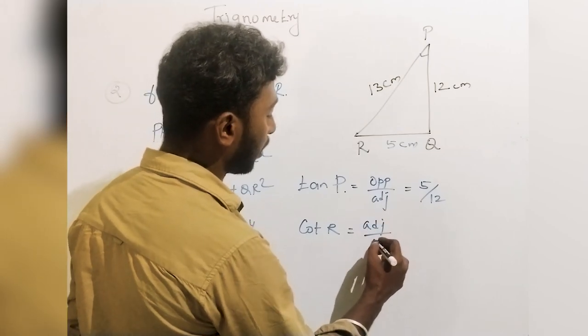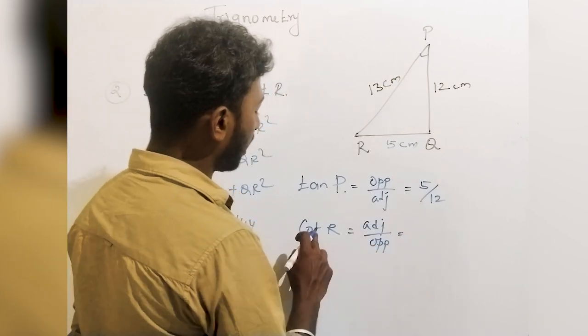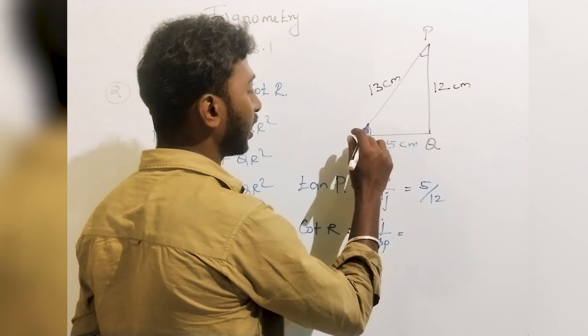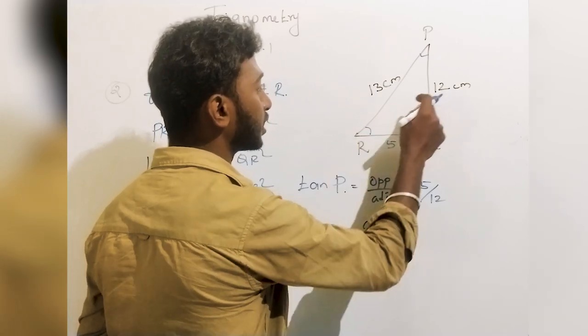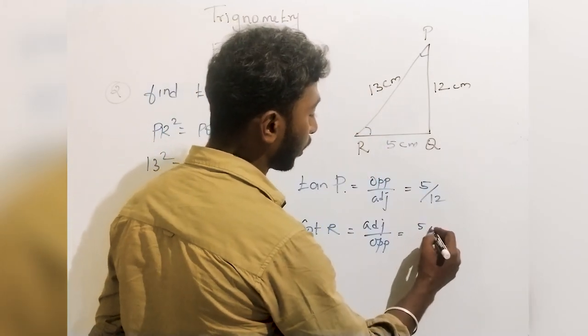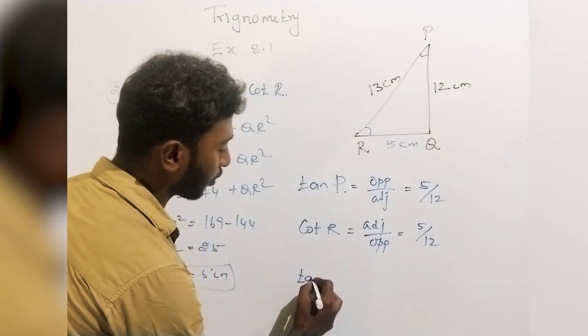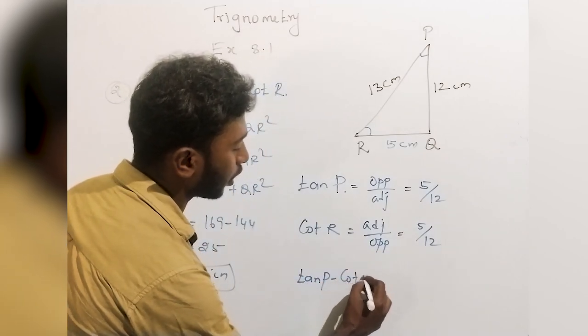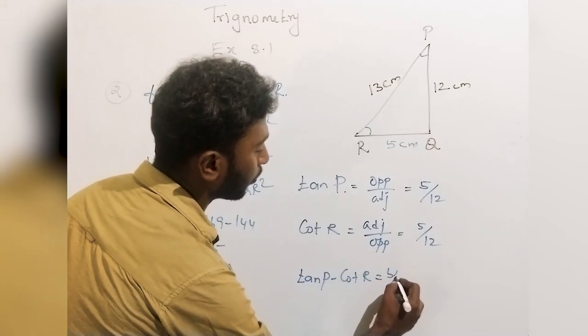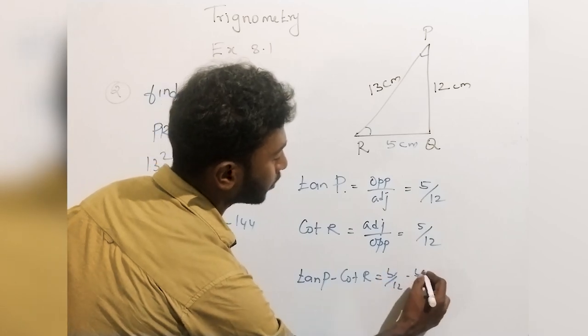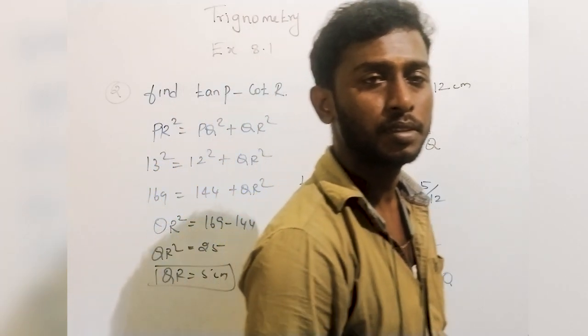Cot R is adjacent by opposite. The adjacent side is 5 cm and the opposite side is 12 cm, so cot R is 5 by 12. Tan P minus cot R equals 5 by 12 minus 5 by 12, which equals 0. Thank you.